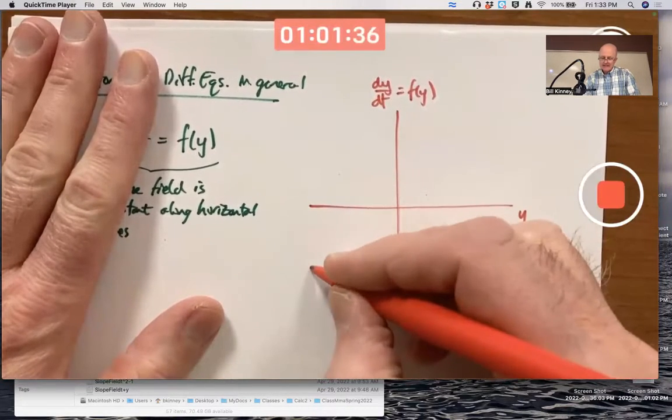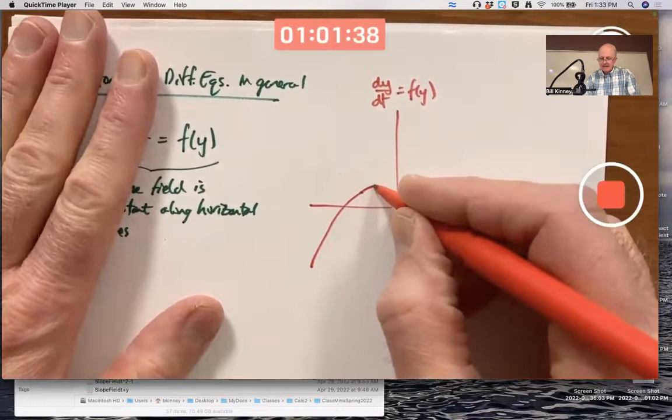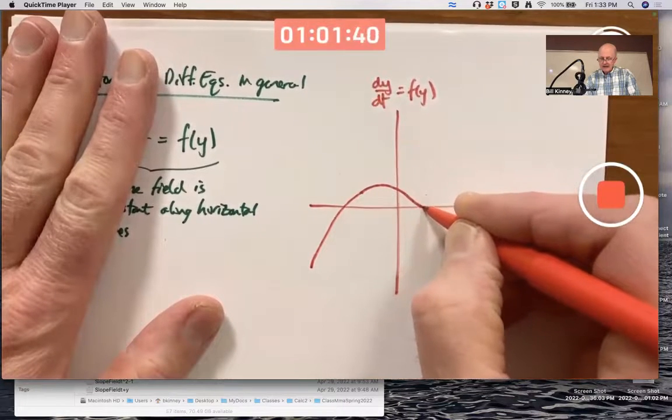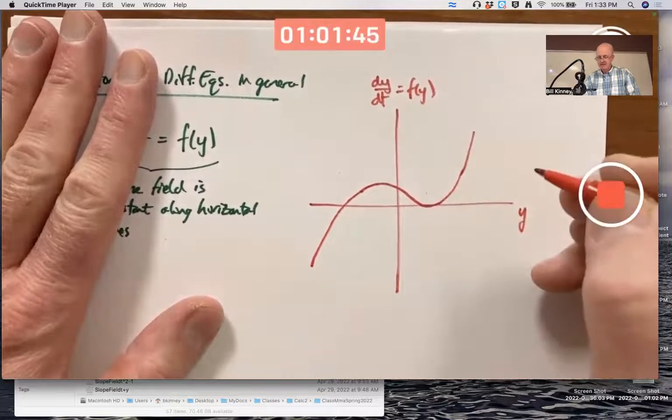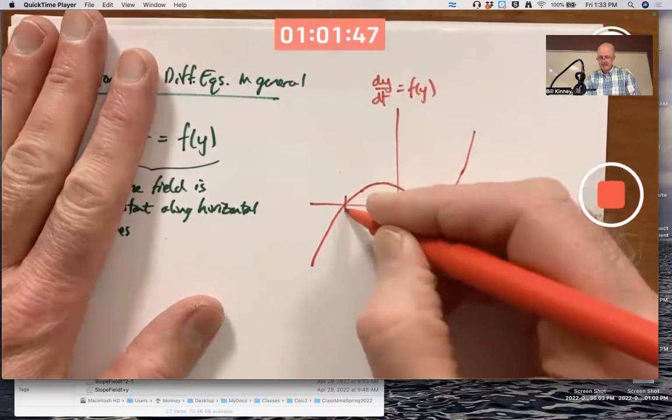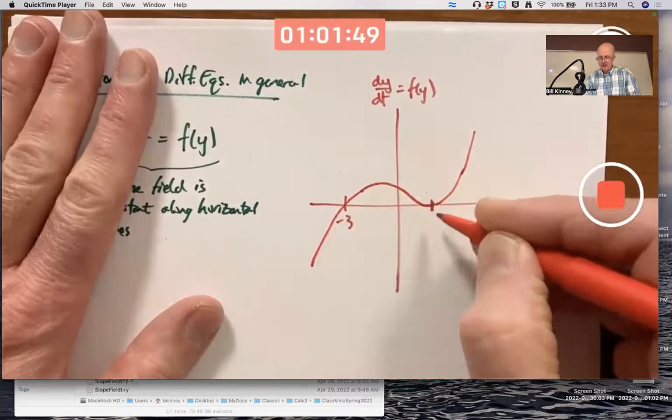Maybe it looks like this, kind of like a cubic perhaps. Maybe this is negative 3 here and this is positive 2 right there, say.